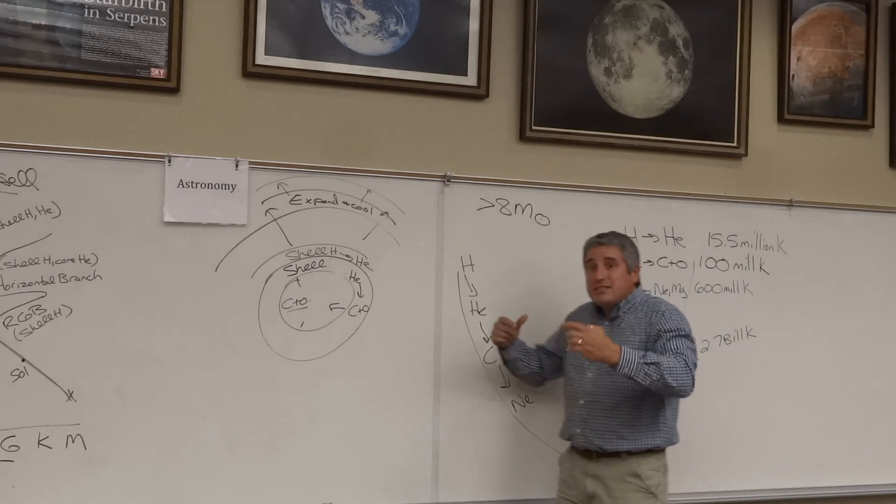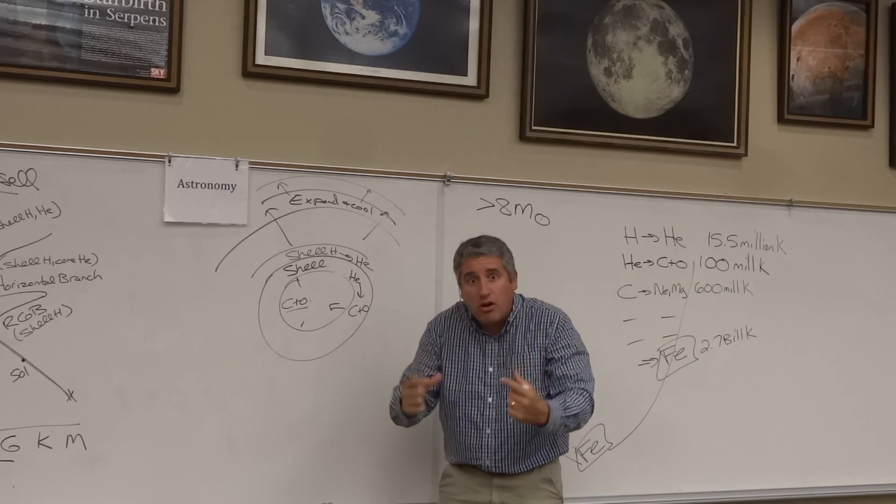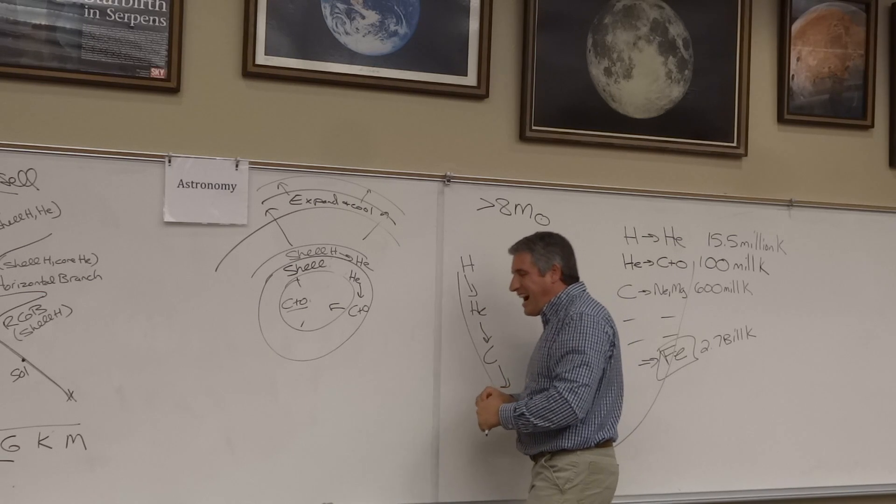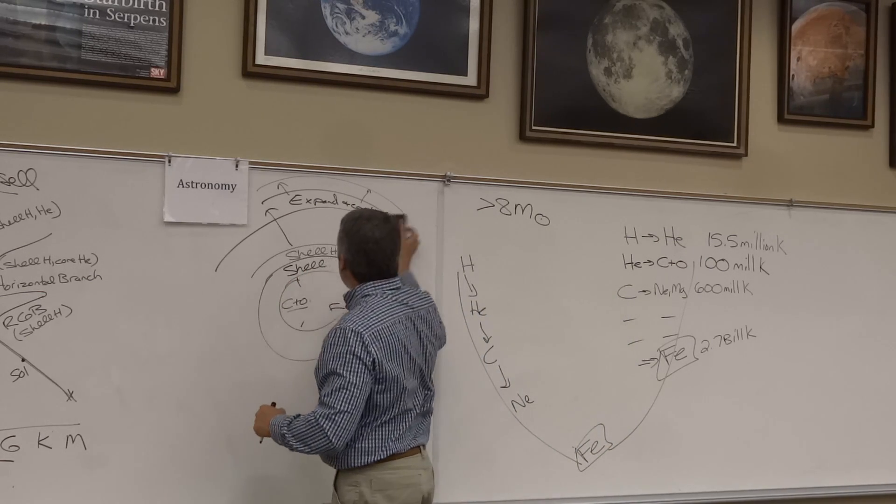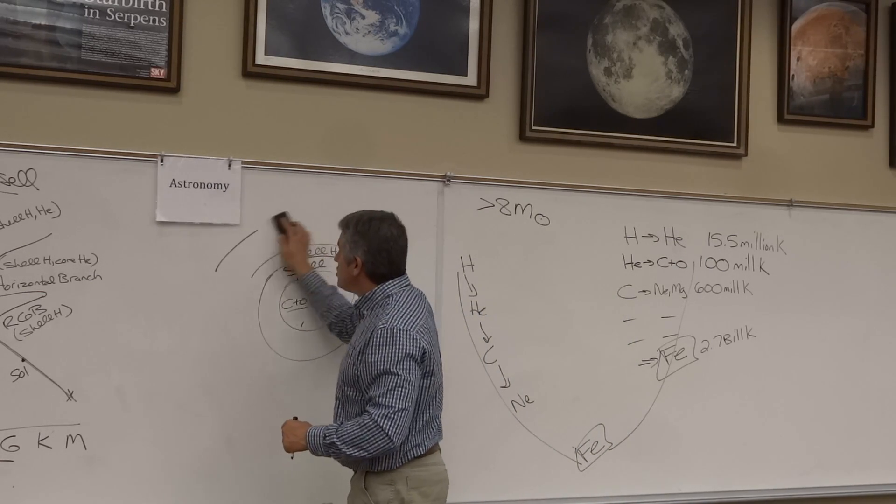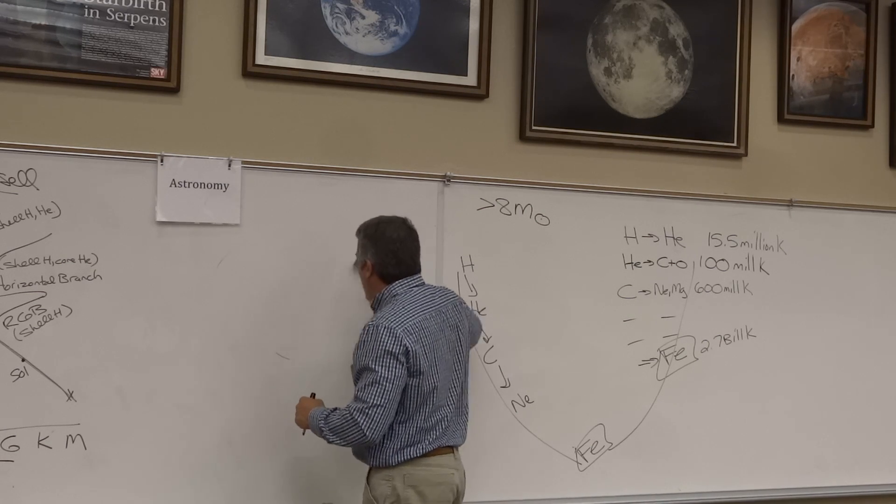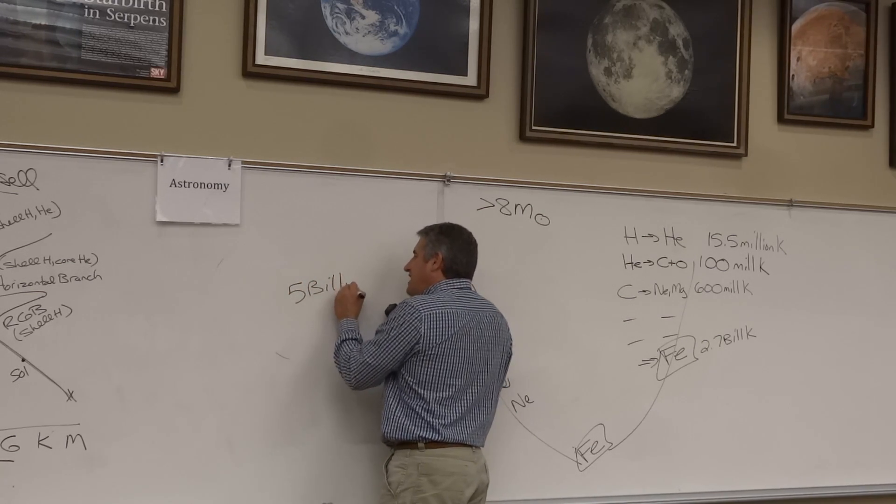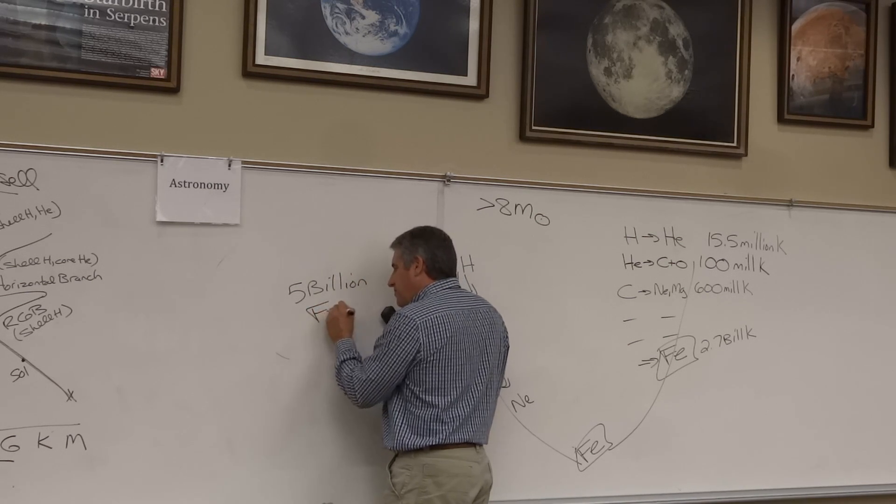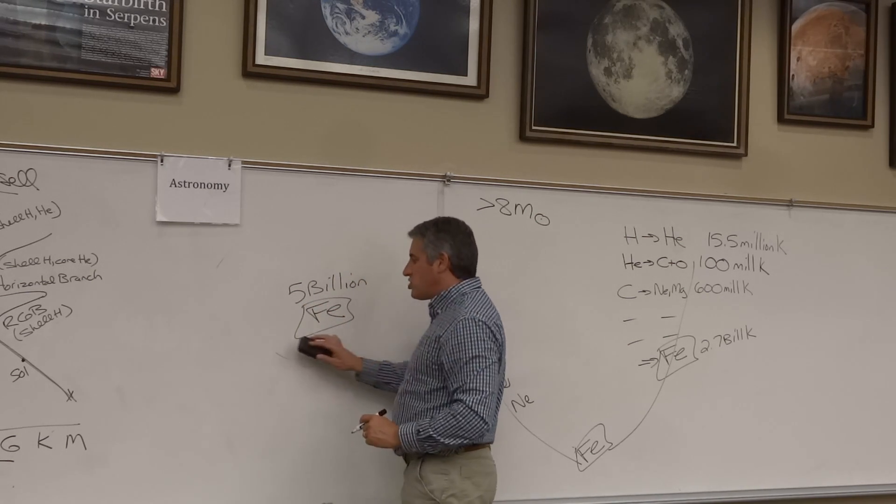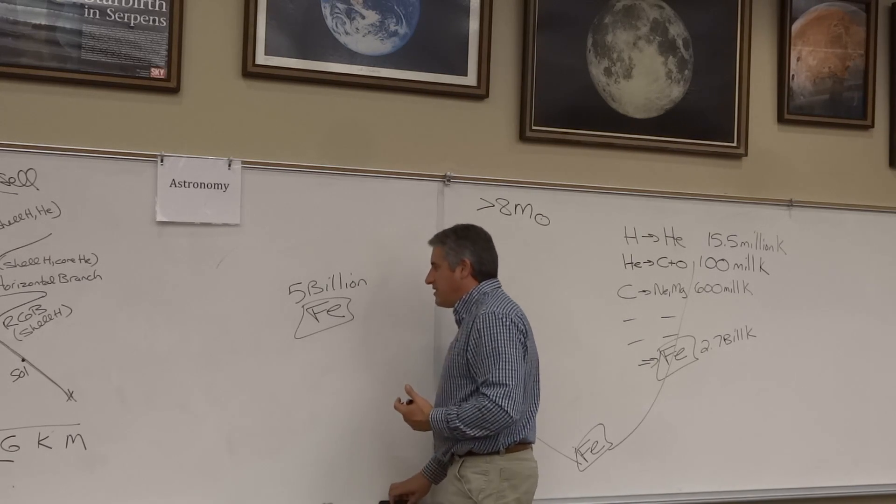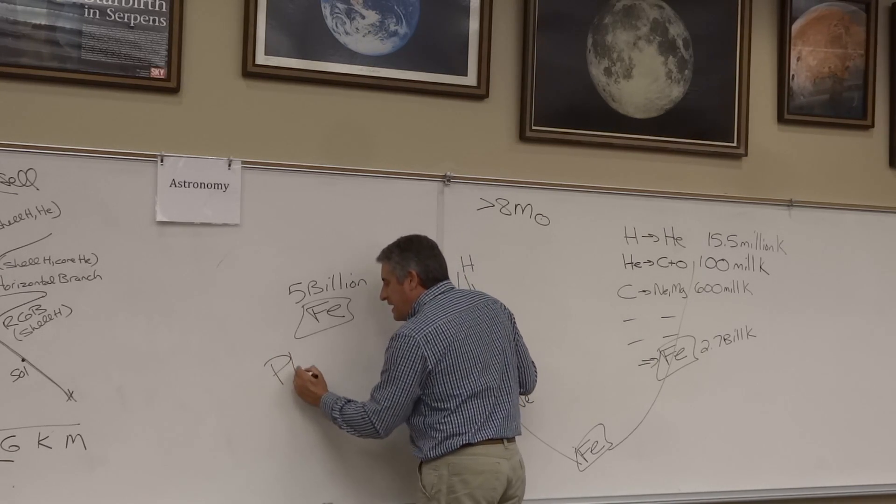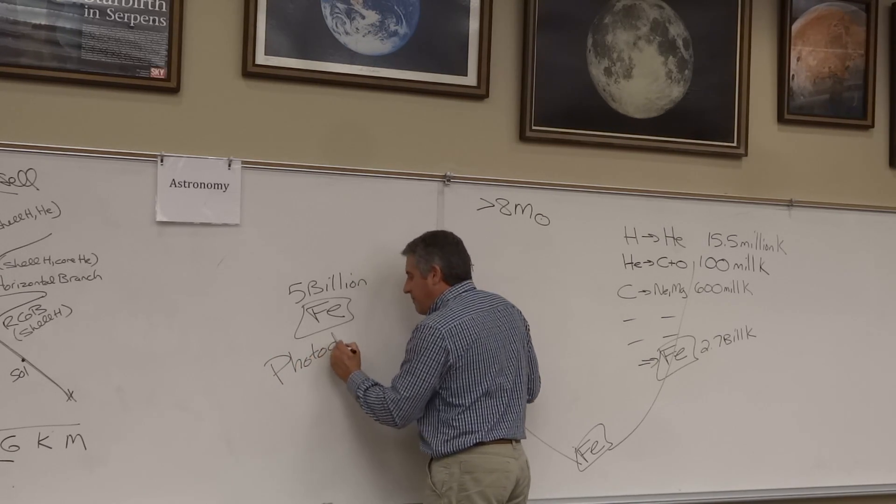So what happens is the core continues to collapse harder and harder and the temperature keeps getting higher and higher. Eventually the temperature of the core of these giant stars reaches a whopping 5 billion Kelvin. And the iron that is sitting there literally is destroyed by the energy of the heat. An event known as photodisintegration happens.